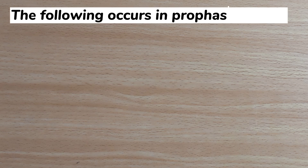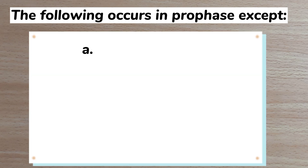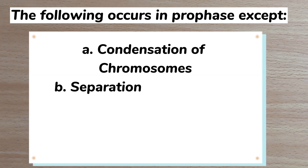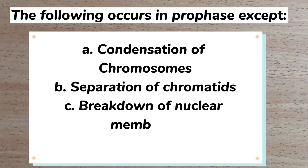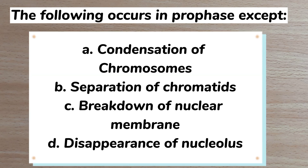Number 11. The following occurs in prophase except: A condensation of chromosomes, B separation of chromatids, C breakdown of nuclear membranes, D disappearance of nucleolus. Answer: B separation of chromatids.